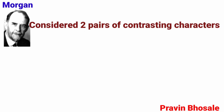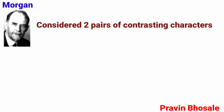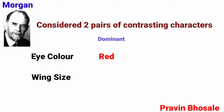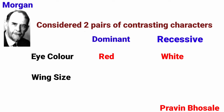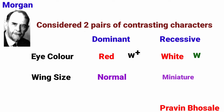Morgan considered two pairs of contrasting characters: eye color and wing size. In eye color, red color is dominant and white is recessive. The gene for white color eye is small w, and for red color is w plus. In wing size, normal wing is dominant and miniature wing is recessive. The miniature gene is small m, and for normal wing the gene is m plus.